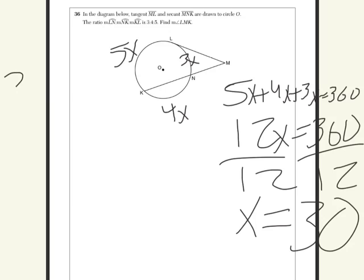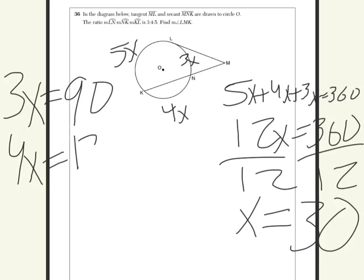But you don't stop there because you have to multiply x by 3, and 3 times 30 equals 90. You have to multiply it by 4, and 4 times 30 equals 120. You have to multiply it by 5, and 5 times 30 equals 150.